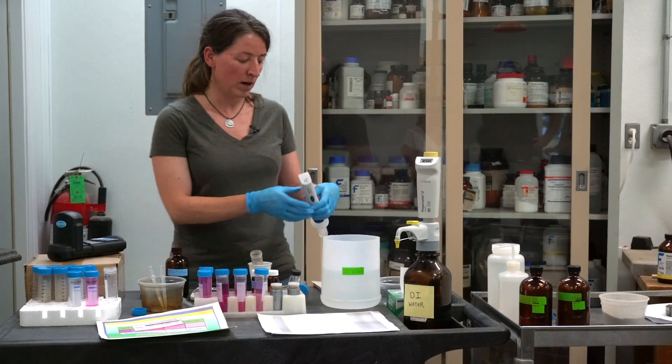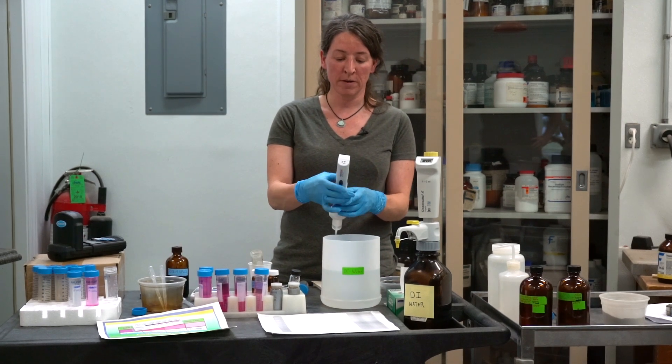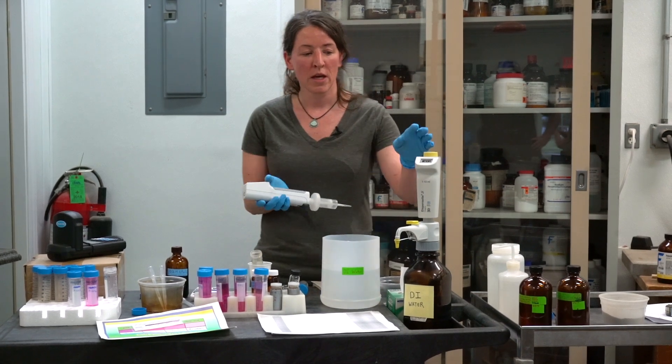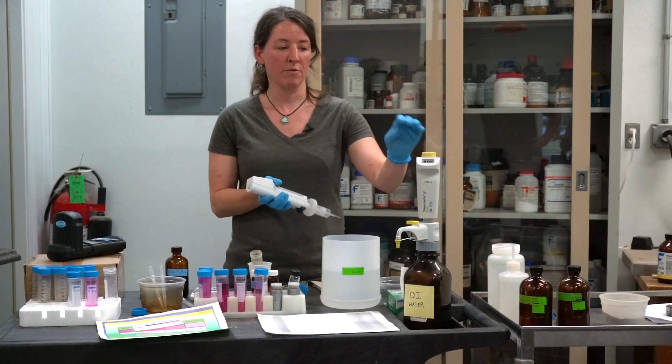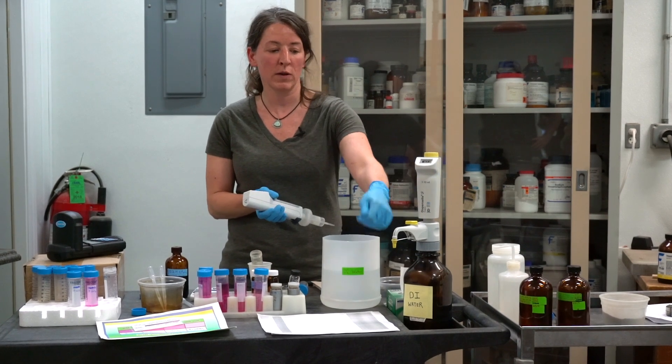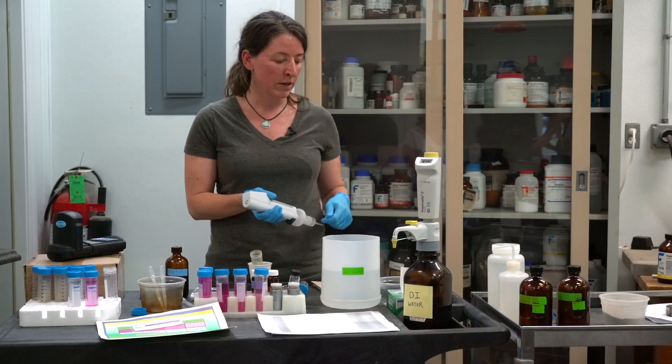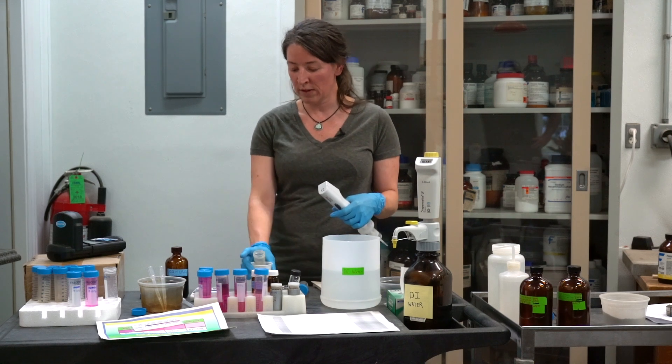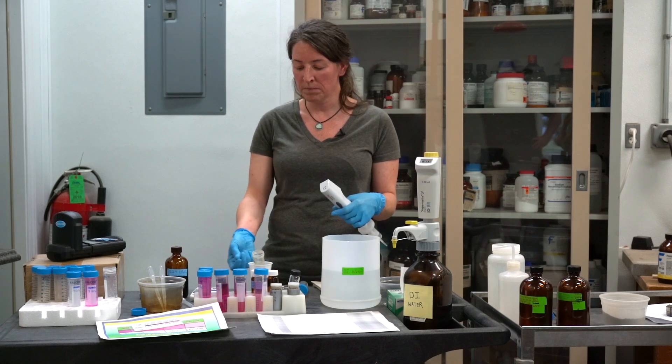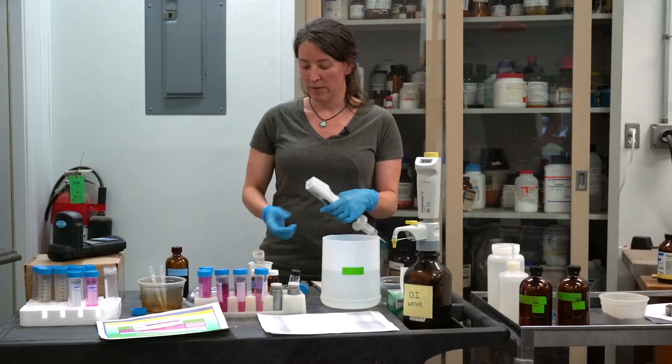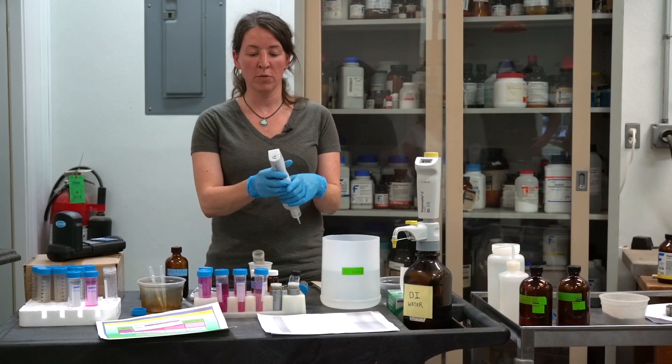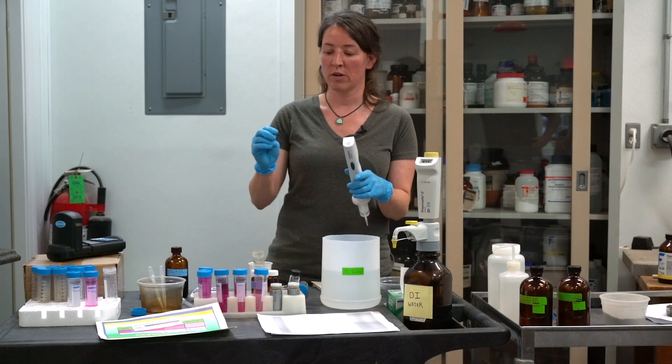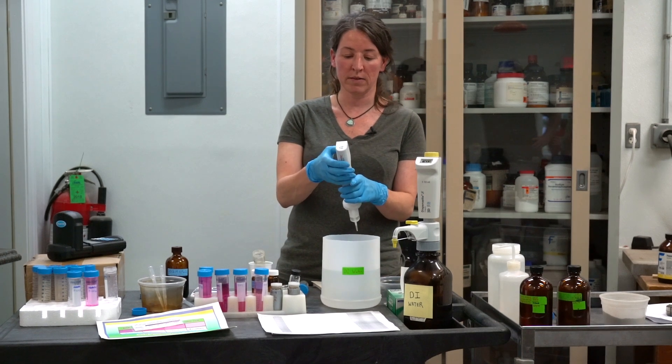We have our sample. We're adding 18 milliliters of DI water. Here at the lab, we use this handy step dispenser. You can get a bottle top dispenser that I recommend would be the quickest for you in a field event to quickly dispense 18 milliliters, or graduated cylinder, or you can use your scale. Once you have your soil in there, tare it to zero, and you can add 18 milliliters. You need to make sure that it's 18. If you get more or less in, it could skew your results.